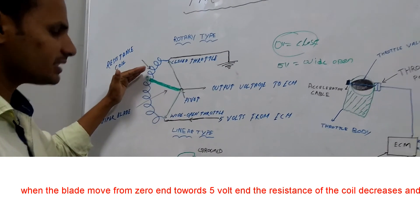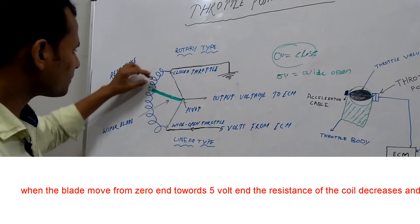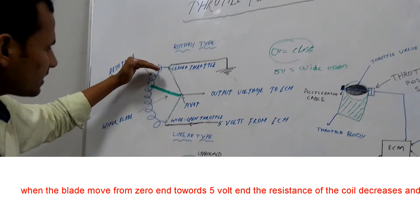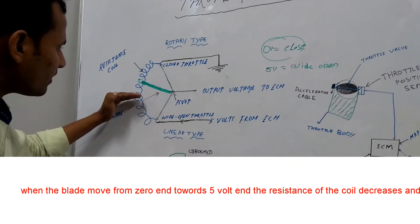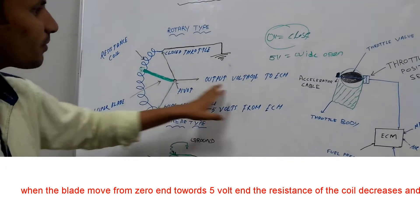As the valve opens again, then the wiper blade also slides towards the 5 volt end and increases the supply to the ECM.